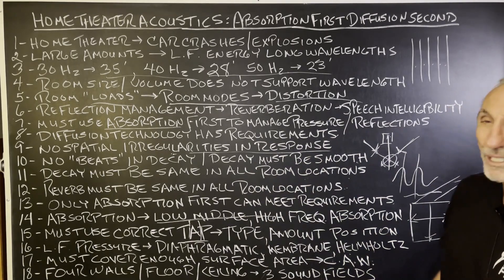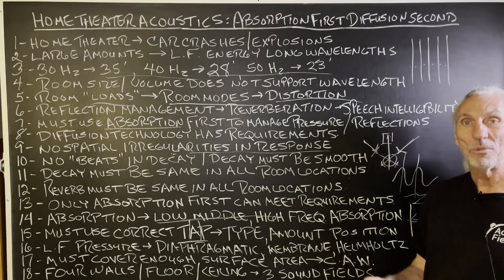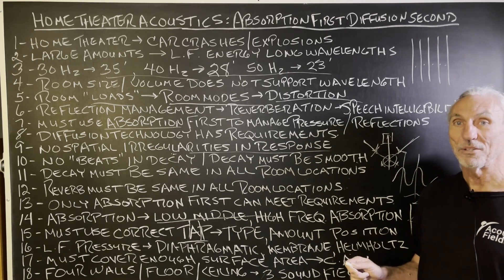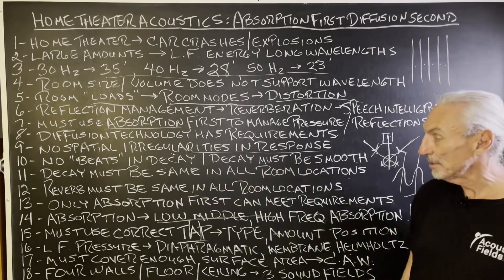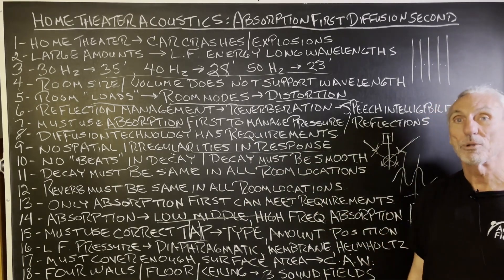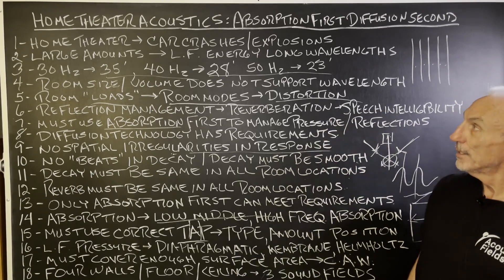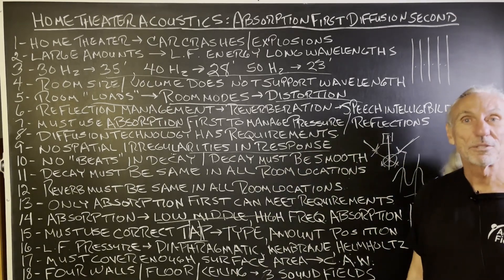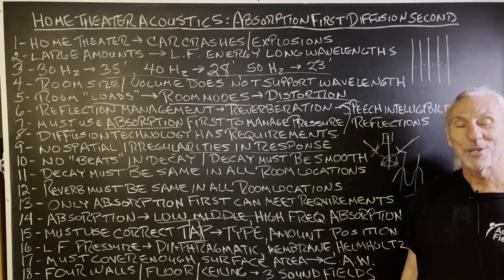Home theater acoustics is all about pressure, all about energy — and the room only sees energy. Diffusion really sees the energy, so we have to make sure those criteria are met by using absorption first. Home theater acoustics: absorption first, diffusion second. Hope this helps — thank you.